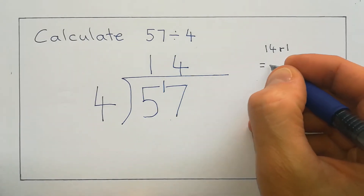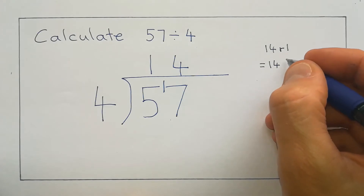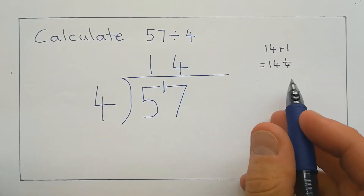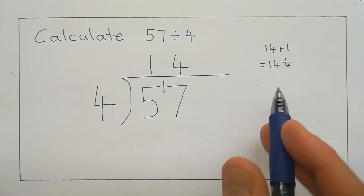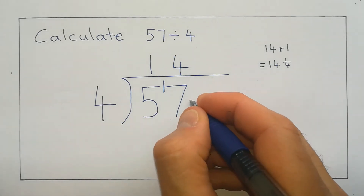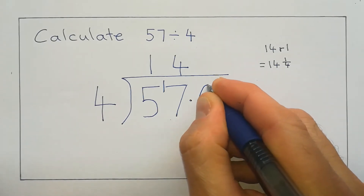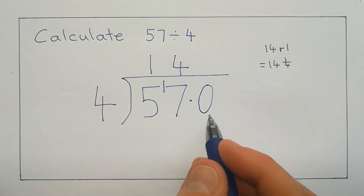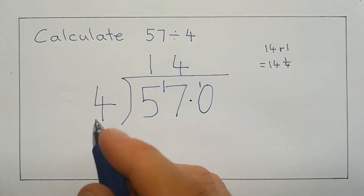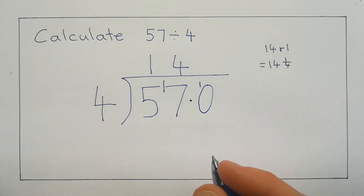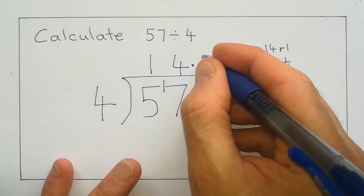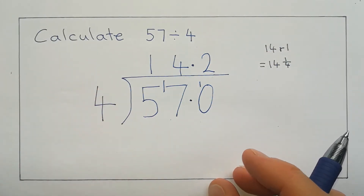Or we could write our answer as 14 and 1 over 4, or 14 and a quarter. But actually, what I'm going to do is go with neither of those answers — I want an answer as a decimal. So I've got my 1 left over, but I've got nowhere to put it. So I'm going to put a decimal point here and put a 0 at the end. Now I've not changed the value of the number — 57 or 57.0 is still the same. The 1 I had left over I can now put in front of the 0, so I can say, how many times does 4 go into 10? First I need to put my decimal point up here, and then 4, 8 — that's twice. And then 9, 10 — that's 2 more left over.